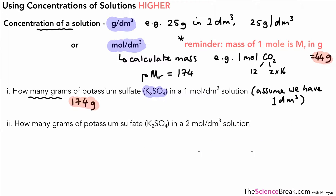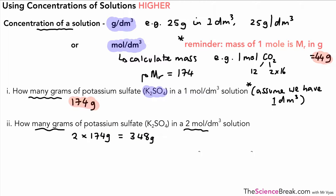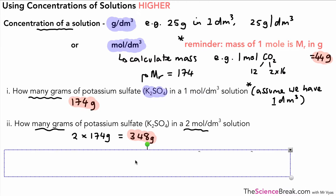Let's look at a second example: how many grams of potassium sulfate are in a 2 moles per decimetre cubed solution, assuming we have one decimetre cubed? Well, if one mole has 174 grams, then a 2 molar solution must have 2 × 174 grams, which is 348 grams. That's quite straightforward.